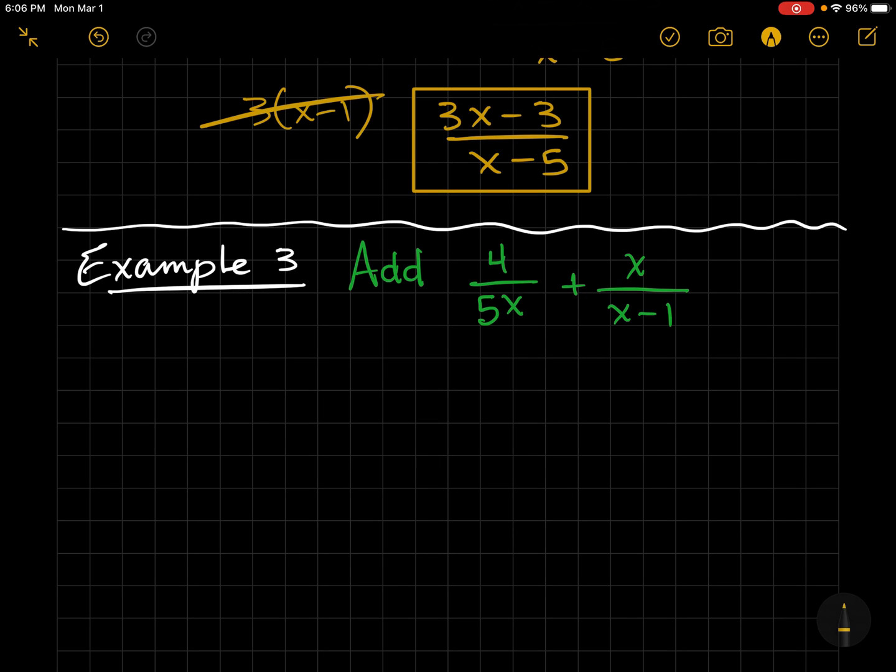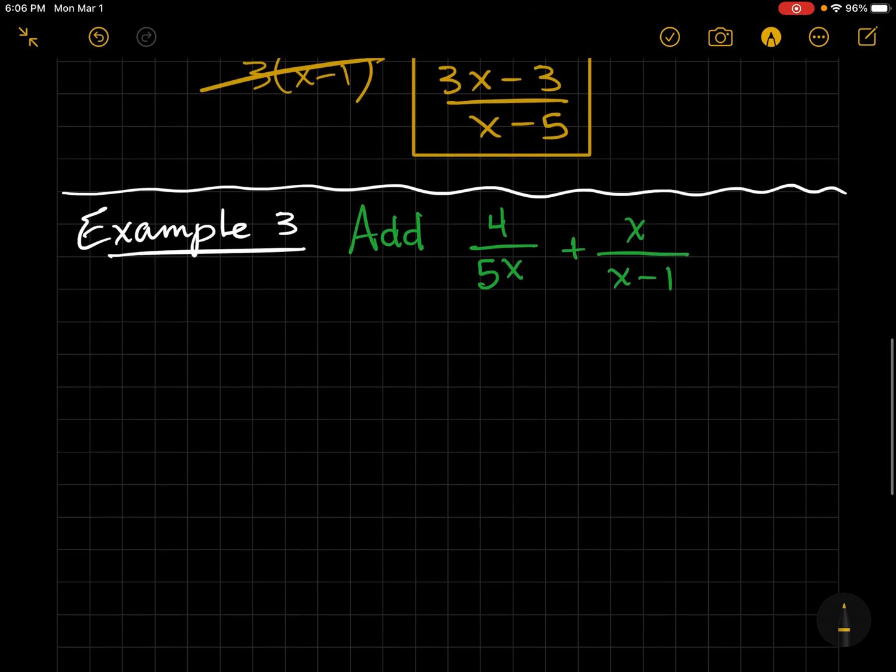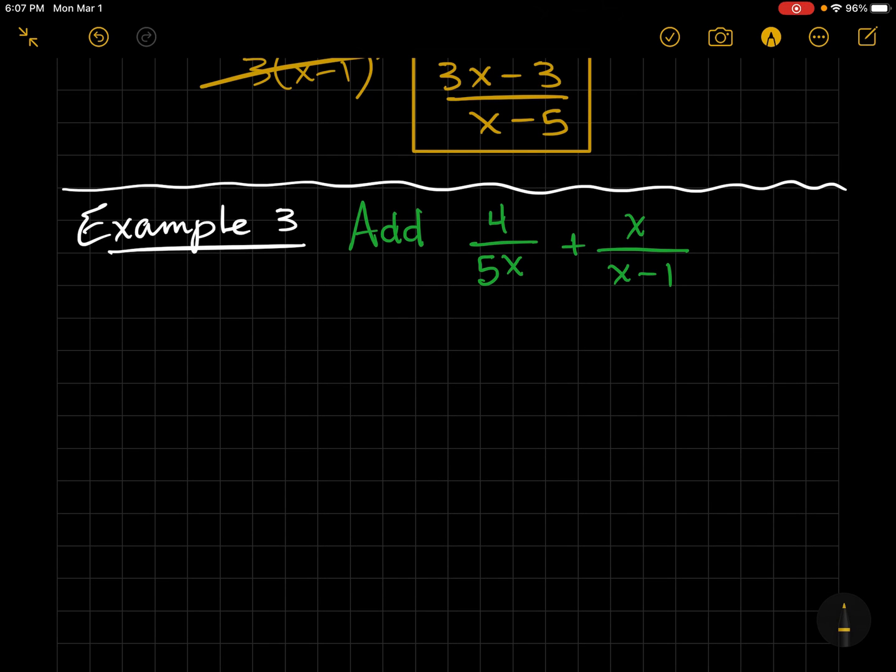Let's look at example 3. Here, we do not have common denominators. So I'm going to show you my process for getting the denominators to be common. So first of all, both of these denominators are fully factored. If they weren't factored, I'd factor them out first. And we'll see that in a later example.